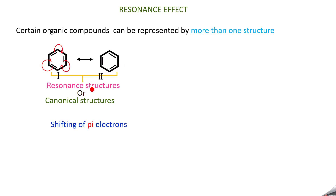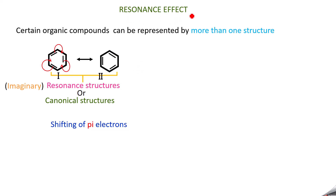These resonance structures are imaginary — they are not real. This effect is what we call resonance effect. If you are able to write more structures for a compound by shifting pi electrons, then that effect is called resonance effect or mesomeric effect.